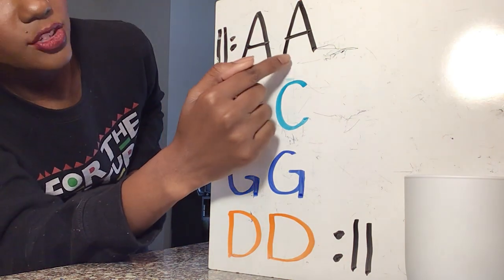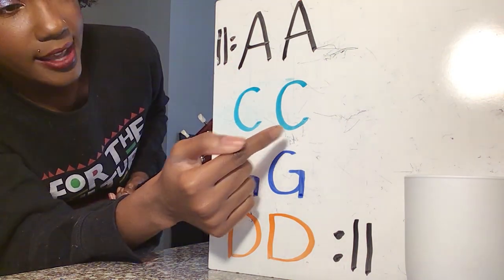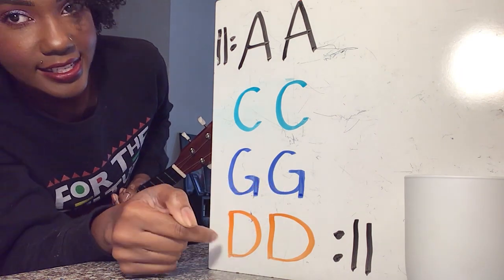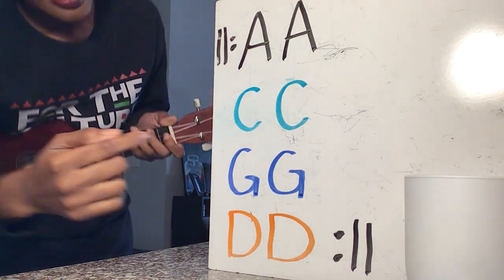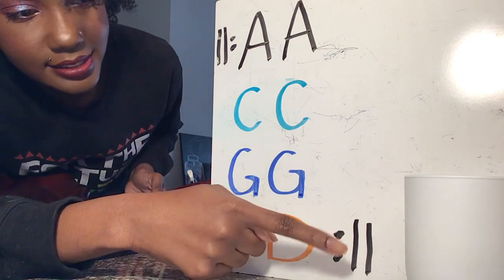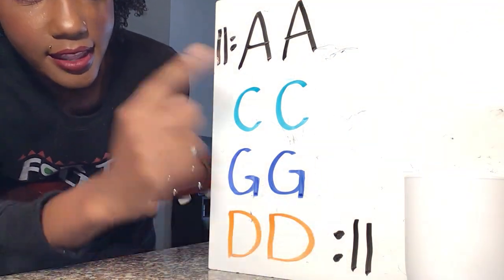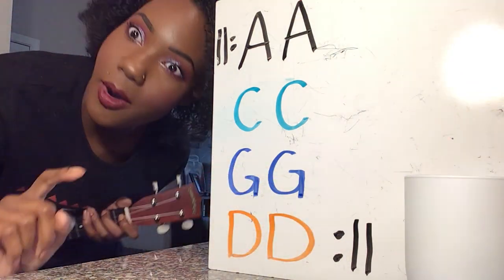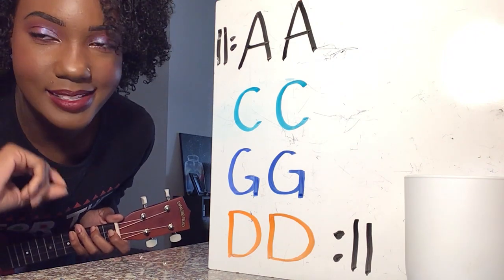We're gonna strum A major twice, C major twice, G major twice, and D major twice. But wait, I see a symbol on here that I haven't talked about yet, but I'm sure you already know it because all of you have awesome and amazing music teachers.